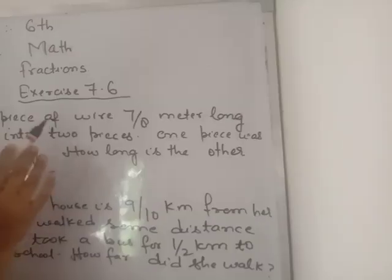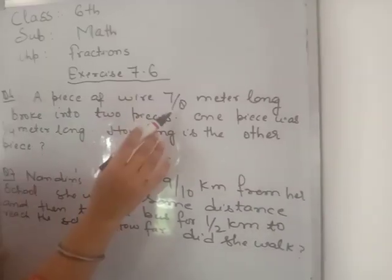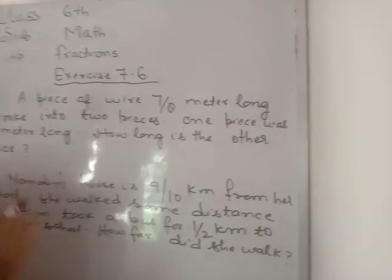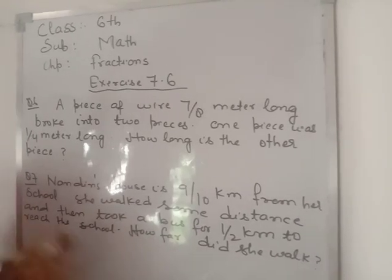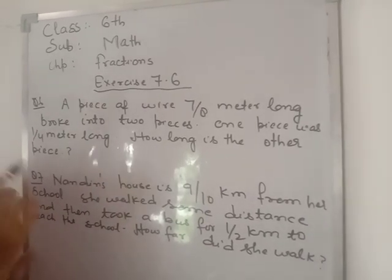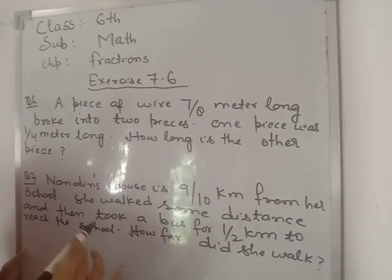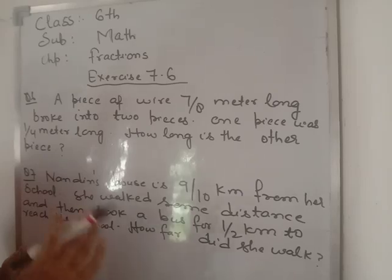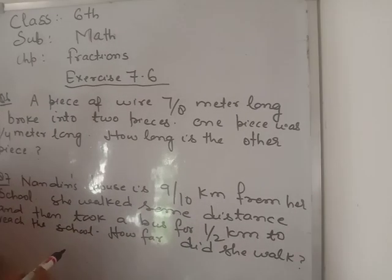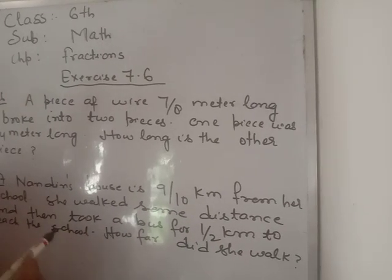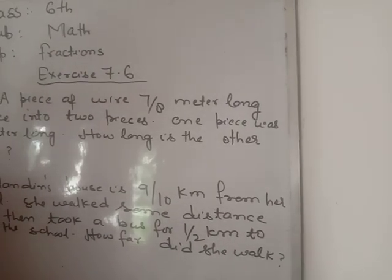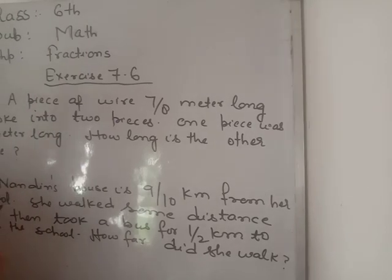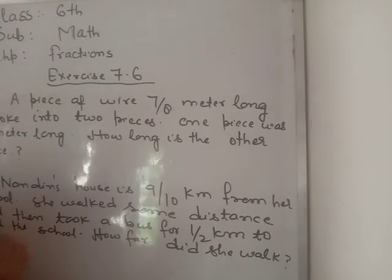A piece of wire is 7/8 meters long. It is broken into 2 pieces. One piece length is 1/4 meters long. We will find the length of the other piece. So, how do we do it?